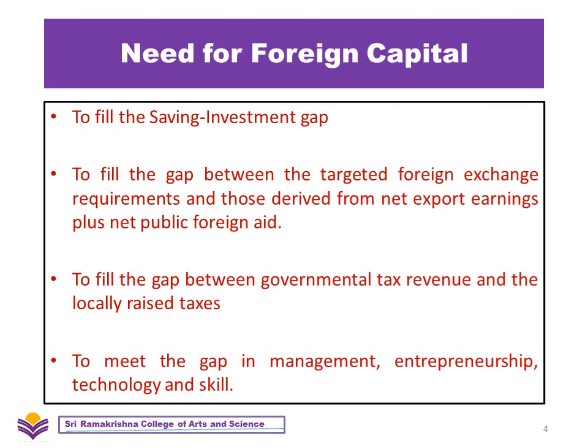There is a need for foreign capital to fill the saving and investment gap. Under the circular flow of income, saving is identified as leakage and investment as injection, and leakage should be equivalent to injection. Saving should be converted into investment; if it is not, a gap arises, and this gap can be filled by foreign capital. Foreign capital also fills the gap between targeted foreign exchange requirements and those derived from net export earnings plus net public foreign aid.